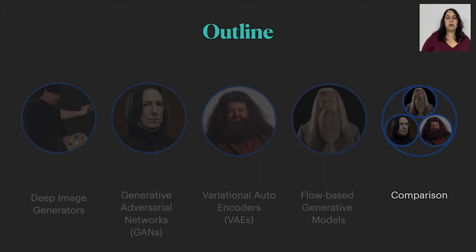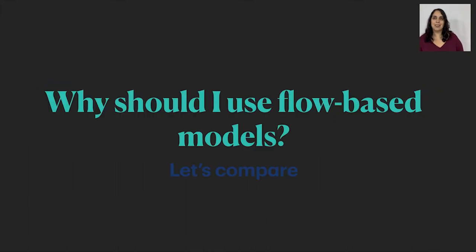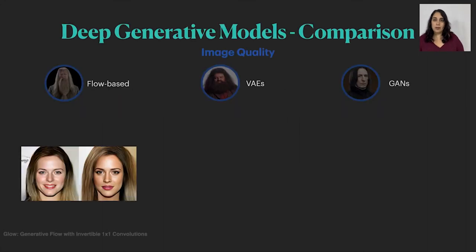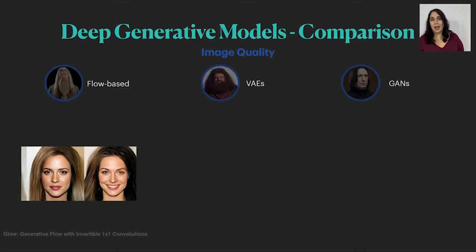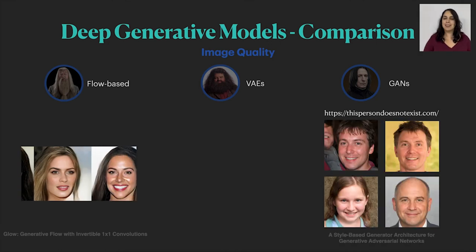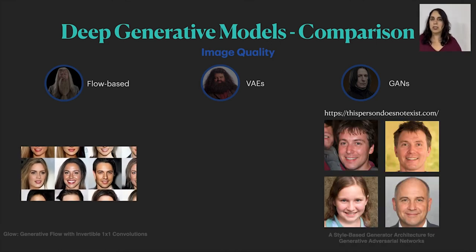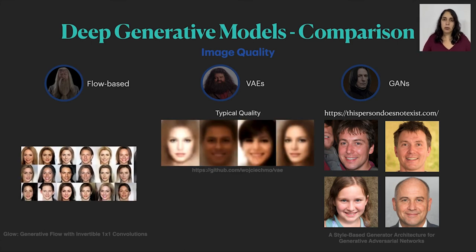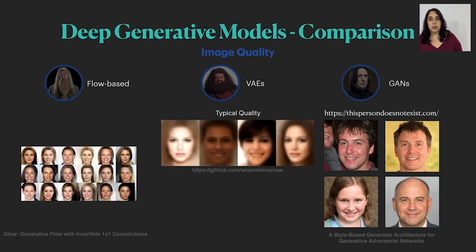So now that we've learned about the three main families of generative models, why should you use flow based models? First of all, quality wise, they generate amazing images. It's the same high quality that we're used to from GANs that are known for their high quality images, and much better than a typical variational autoencoder that tends to generate blur images.